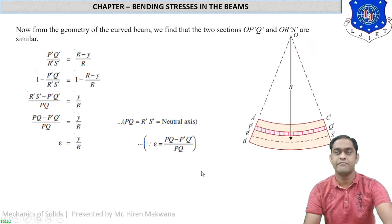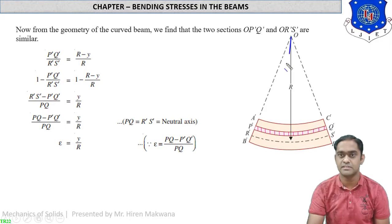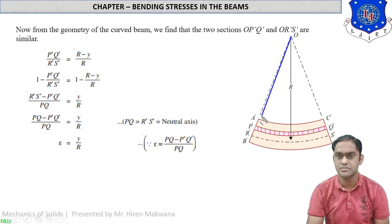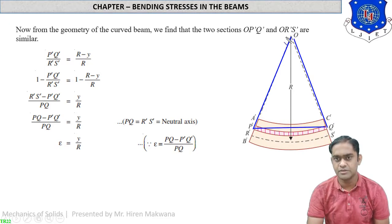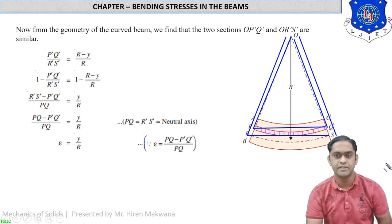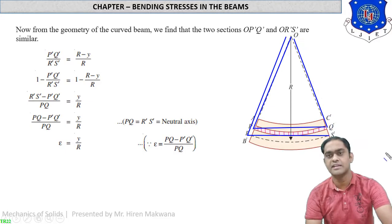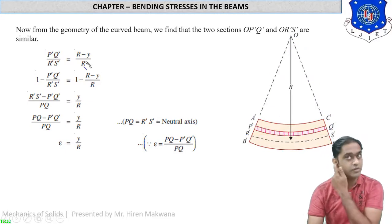From the same figure, you can see that this forms similar triangles. The triangle O-P'Q' and the triangle O-R'S' are similar triangles, as you can see from the figure. So we can take the ratio of their corresponding sides.